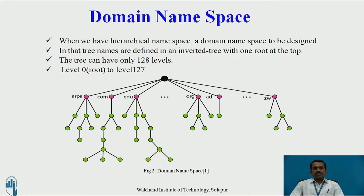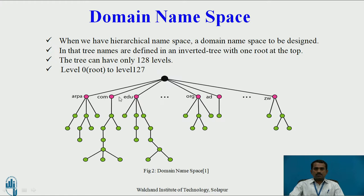This is a domain namespace. When we have a hierarchical namespace, the domain namespace is designed so that the names are defined in an inverted tree with one root at the top. The tree can have only 128 levels, from level 0 at the root to level 127. In this block diagram, this indicates the root, and this whole line is level 1, the second line is level 2, then level 3, level 4, up to 127 levels. The root is a null string.